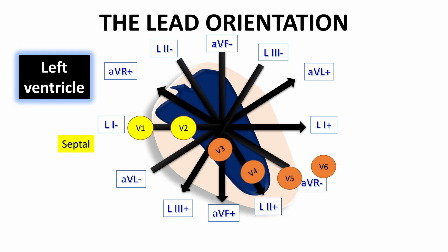V3 and V4 chest leads are closer to the anterior wall of the left ventricle. So they represent the changes that occur in the anterior wall of the left ventricle.